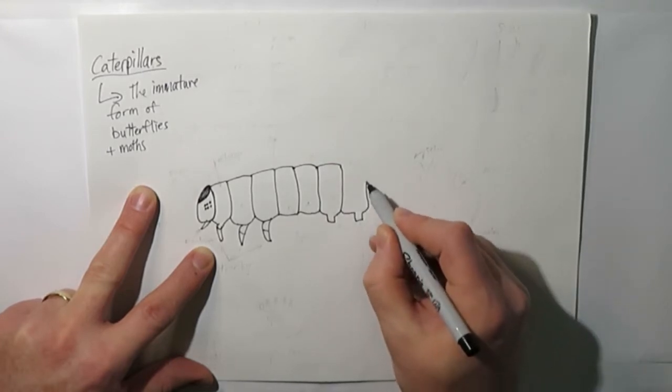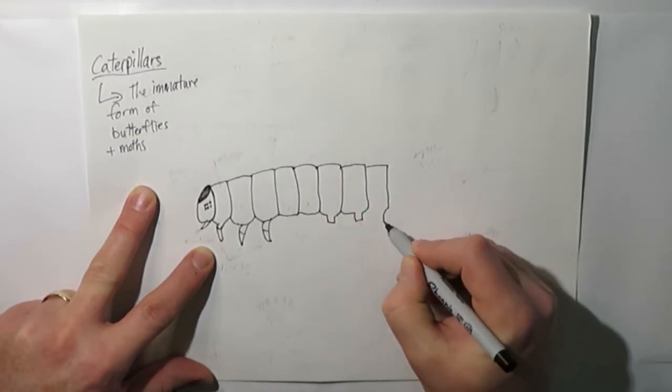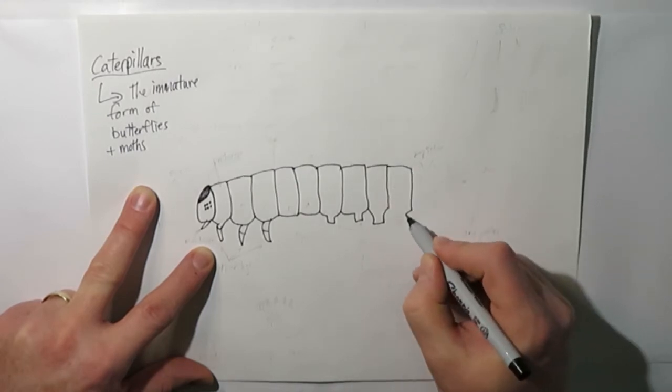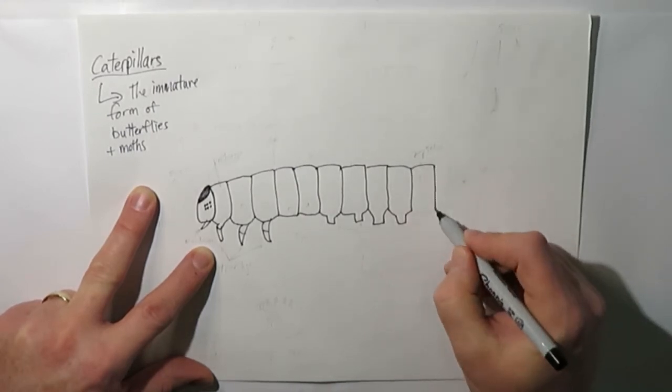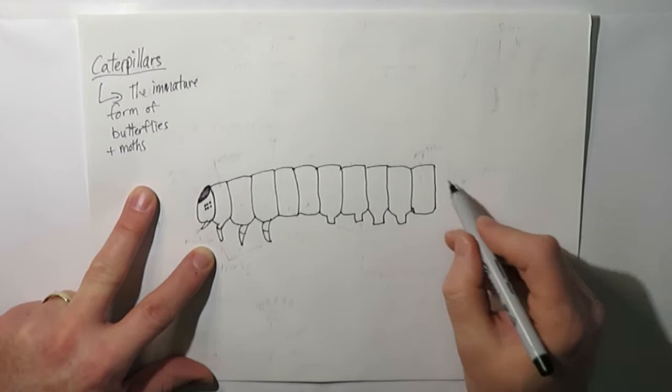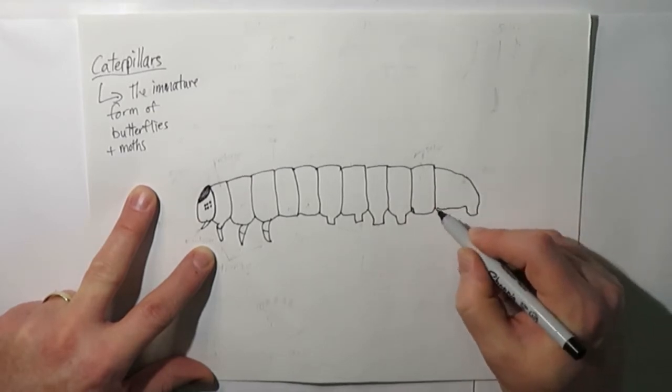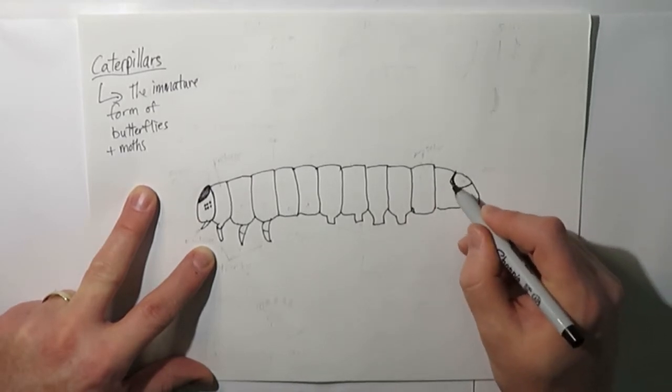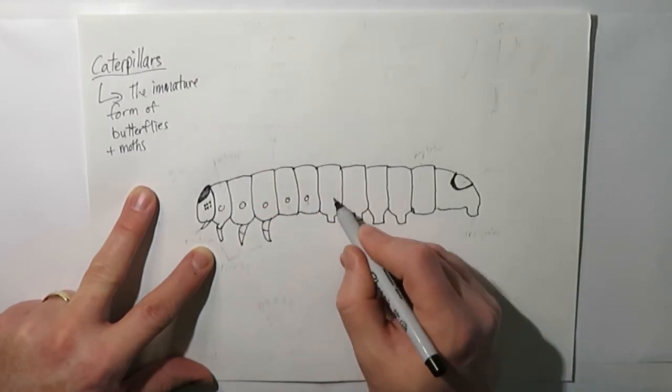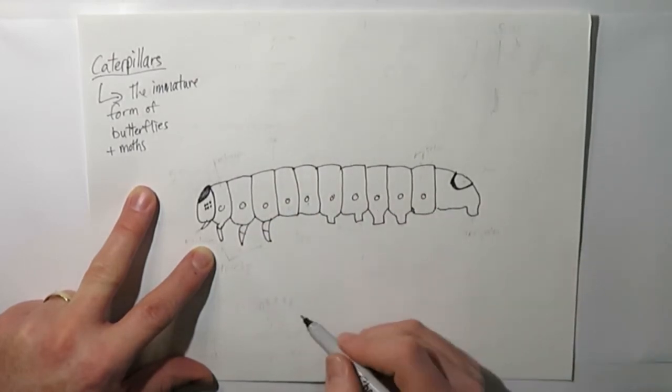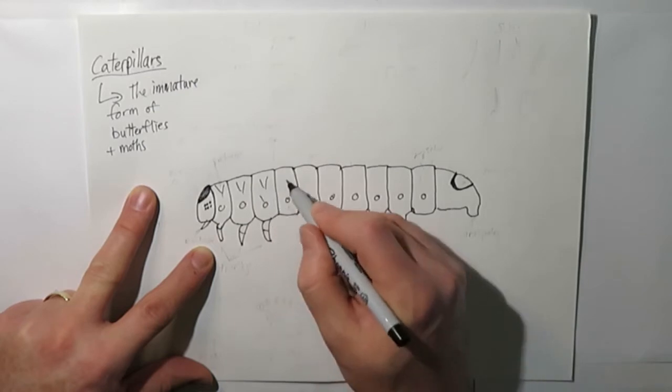Once this is finished drawing out, you'll be able to see what those different parts are called. Then once you know those different names, you can use some of the different characteristics and traits of those particular ones to differentiate between different species of caterpillars.